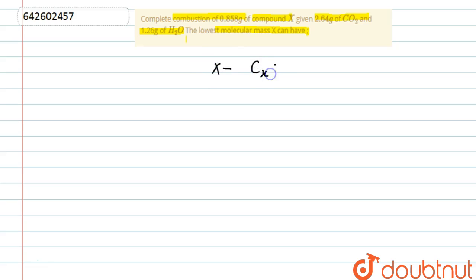CₓHᵧ. Now its combustion reaction takes place: CₓHᵧ + O₂ → CO₂ + H₂O. We are given 2.64 gram CO₂ and 1.26 gram of water.